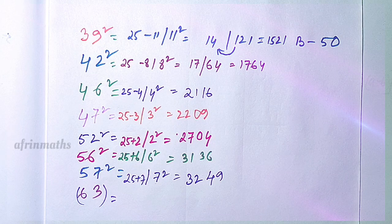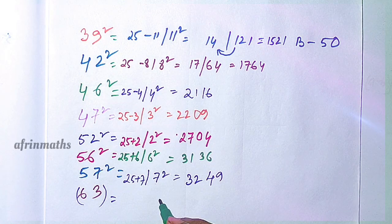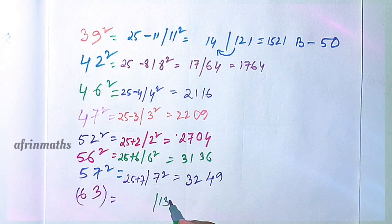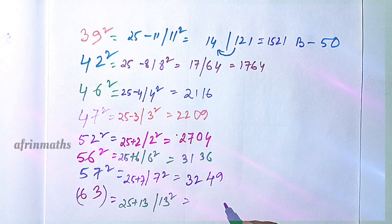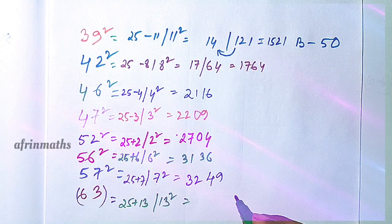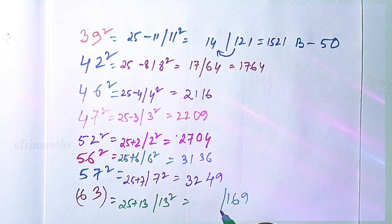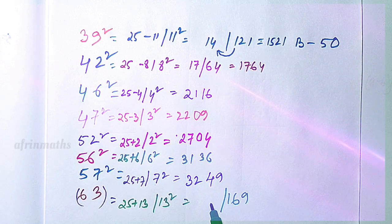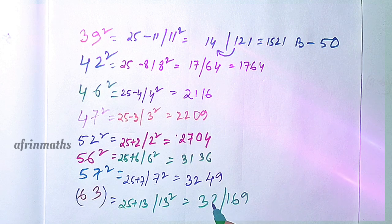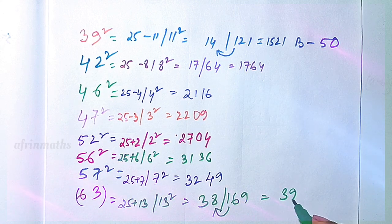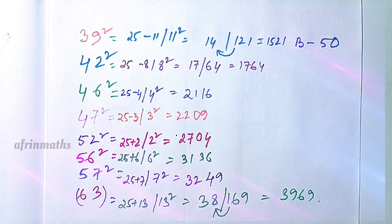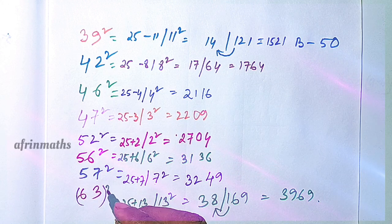Let us check 63 squared. 63 is 13 away from 50. 13 squared is 169, which has three digits, so we carry the 1. 25 plus 13 is 38, and adding the carry gives 39. So the answer is 3969, which is the square of 63.